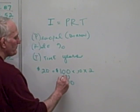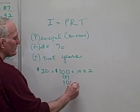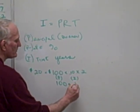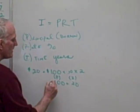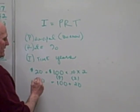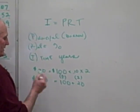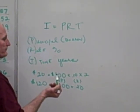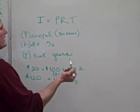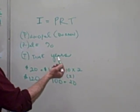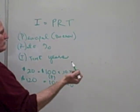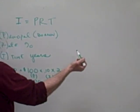That $20 would just be the amount of interest. They would also have to pay back the principal they borrowed plus the interest of $20, so they would have to pay back $120.